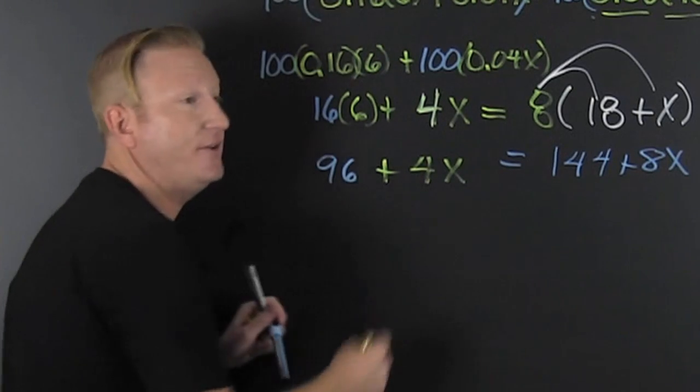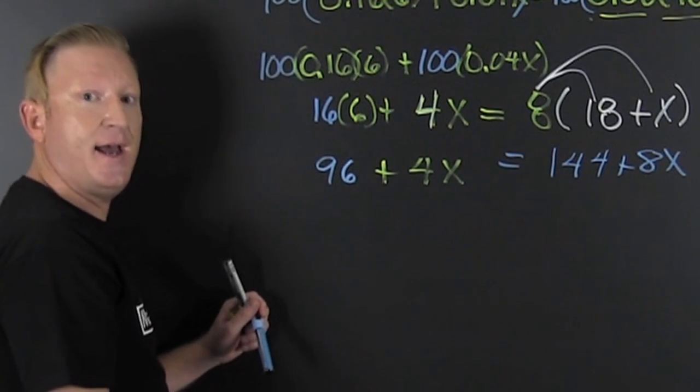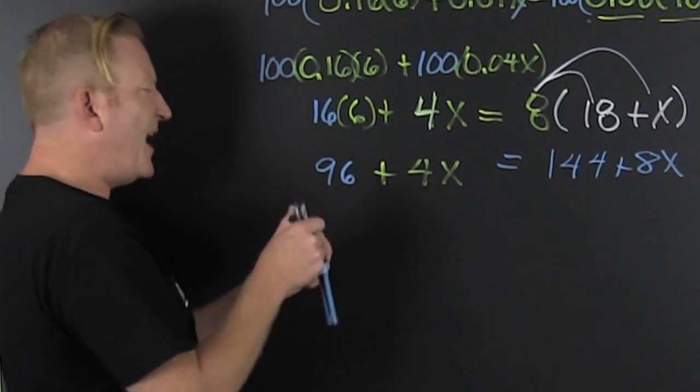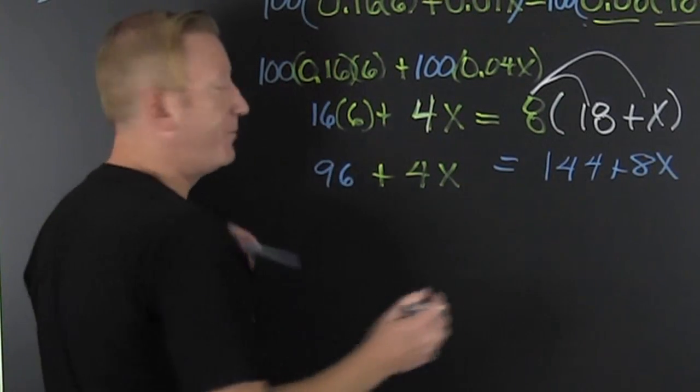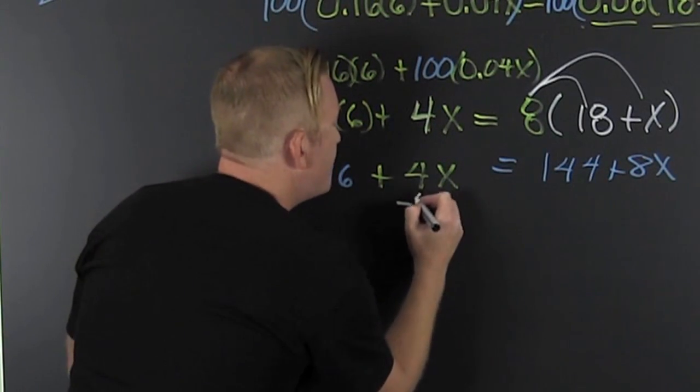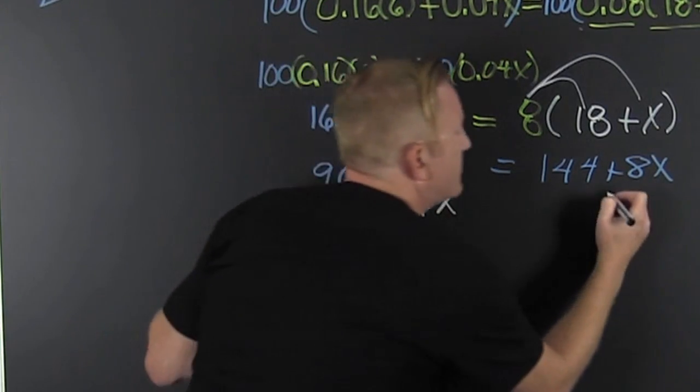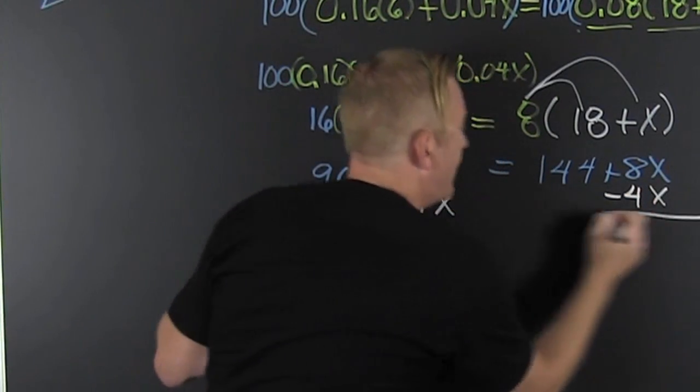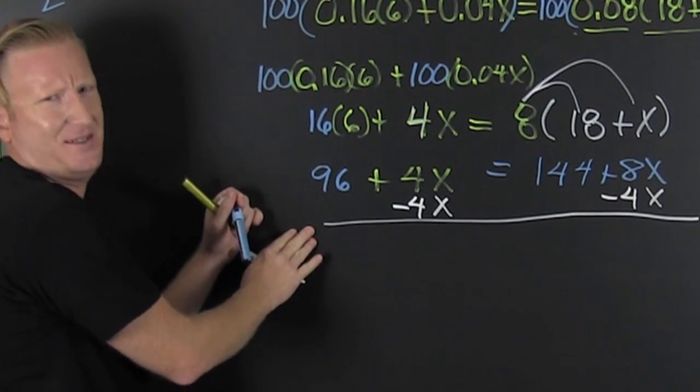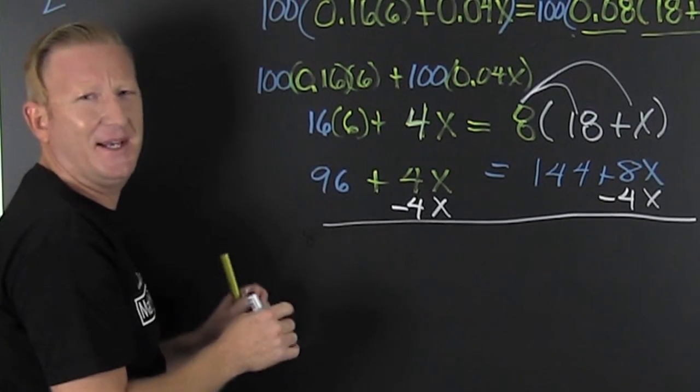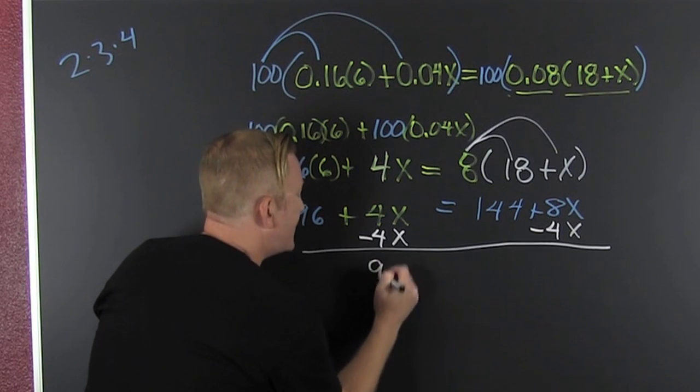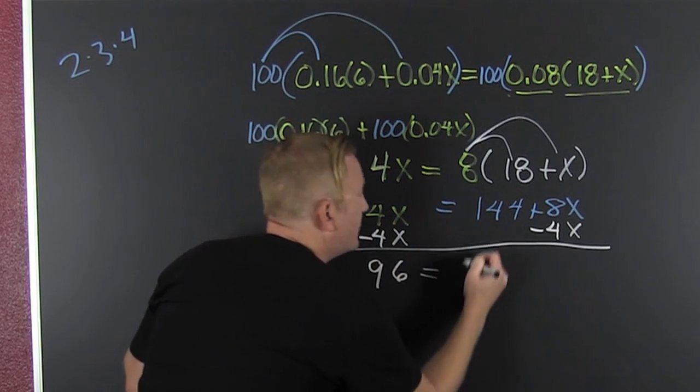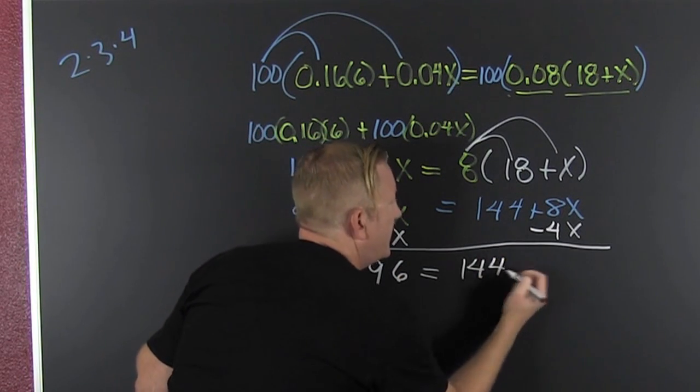Now I got x on both sides. I want them on one side. Which side? Don't care. Some of you guys are left-siders, the variable has to be on the left. But I'm a positive person, so I'm gonna take the small one and put it over to the big one. I'm gonna subtract off that 4x from both sides. So that's 96, that's equal to 144.